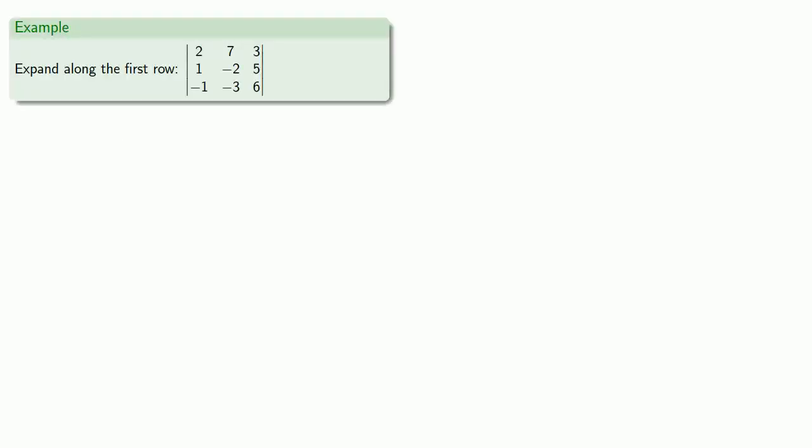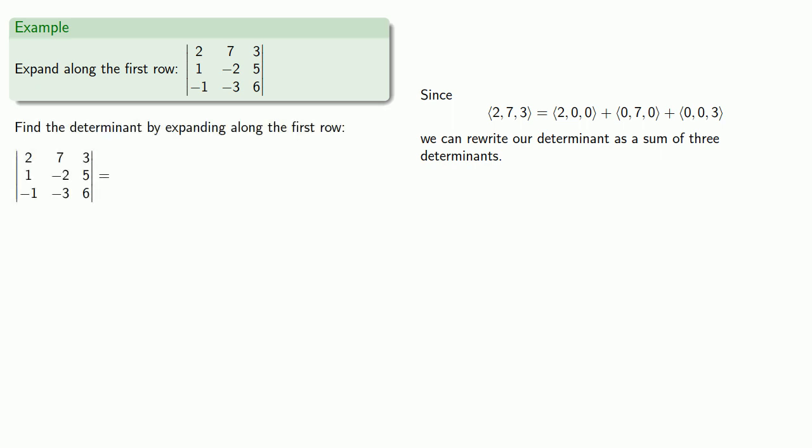So let's say we want to expand the determinant along the first row. So let's take a look at that first row, which we can write as a vector sum. 2, 7, 3. And so we'll make each of these the first row of a new matrix and leave the remaining entries unchanged. So our determinant can be written as the sum.